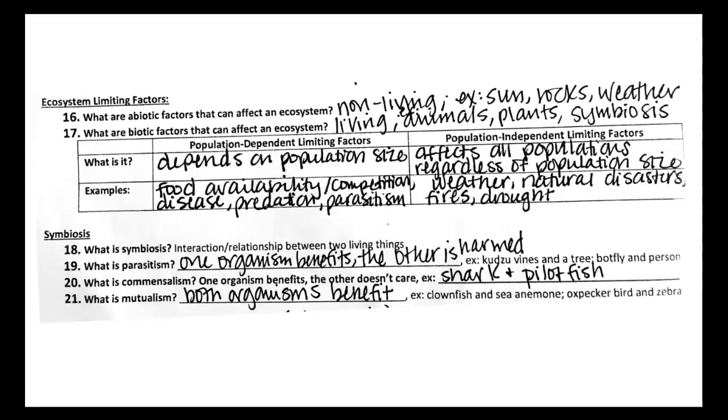And mutualism. Both organisms are going to benefit. So that's two smiley faces. Nemo, the clownfish and sea anemone. That's another example. The oxpecker bird and zebra. The oxpecker bird is going to eat the little mites and bugs and stuff off of the zebra. And the zebra likes that because it's not covered in bugs.